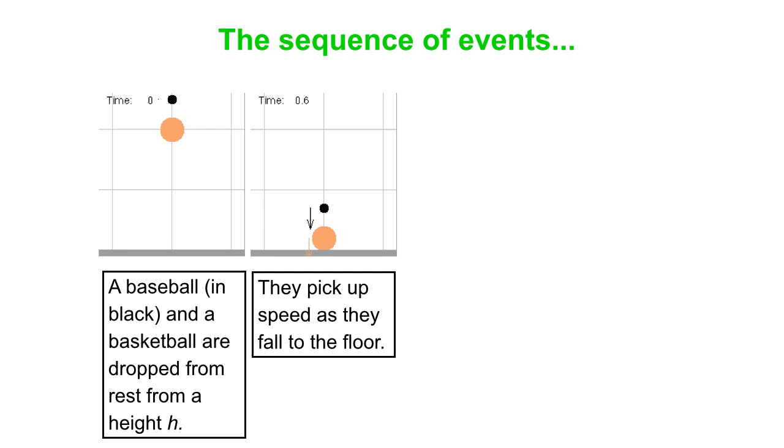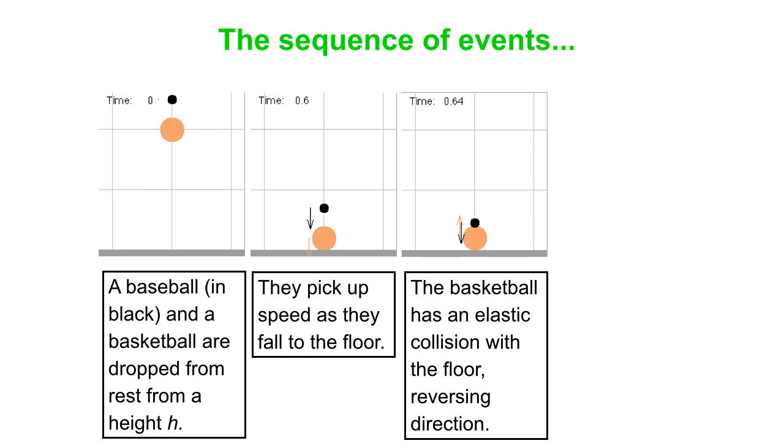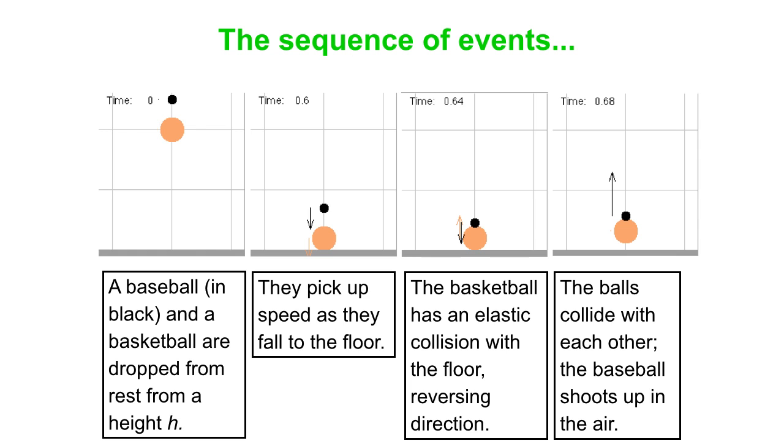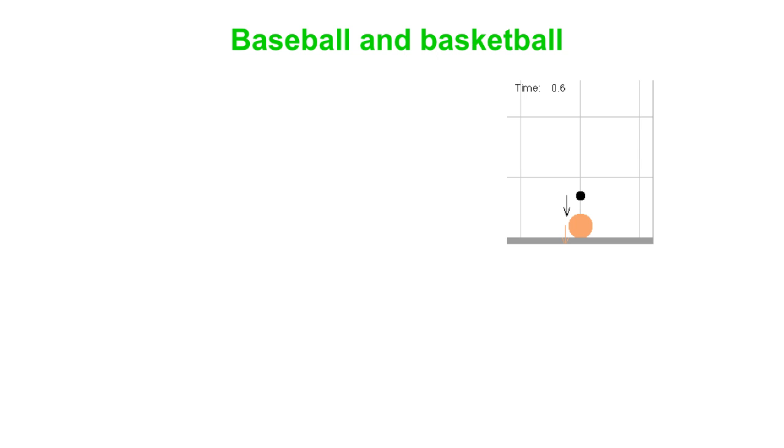They fall down to the ground and pick up speed, then the basketball hits the ground and there's a collision. We're going to assume it's an elastic collision. What that does is reverses the velocity of the basketball and sends it up toward the baseball, which is still coming down. Now there's a baseball-basketball collision, and from that collision the baseball acquires quite a large velocity and shoots high up in the air.